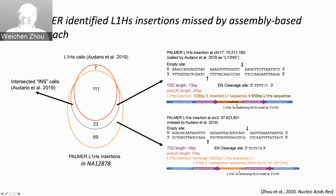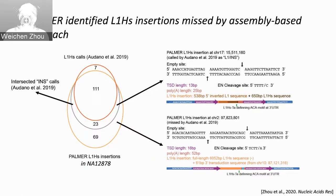You can see the empty site for both strands of DNA and the structural details of the L1HS insertions: a 5'-inverted L1 sequence and a truncated L1 sequence portion, as well as a TSD motif, and blue bars representing the flanking genomic sequences. We also have 69 additional L1HS insertions in NA12878 that we called. We manually validated the structure of all of these calls, and it turns out they are all real and were missed by the assembly-based method.